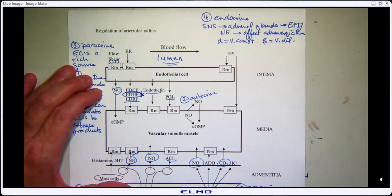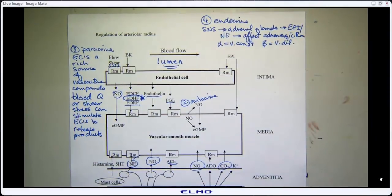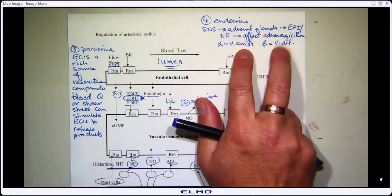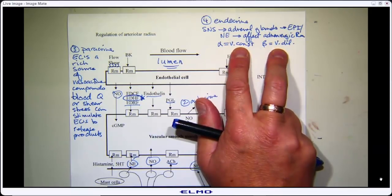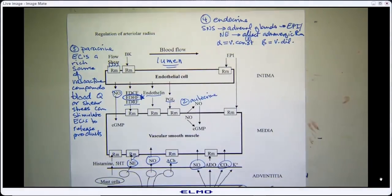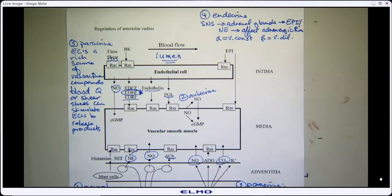We'll see this strategy again at the level of the lung, where there is also no scenario where constricting blood flow to the lungs is a good idea. The lung takes a very different approach — it decorates the vasculature with equal amounts of both receptor types so one cancels the other out, and nothing ever happens. The body keeps using the same core mechanisms in creative ways. Depending on what we want to happen in a tissue, we decorate it with a different membrane receptor population.